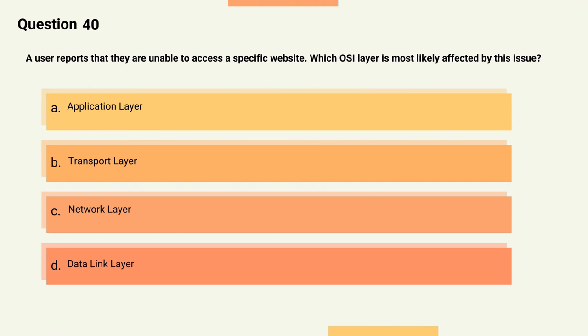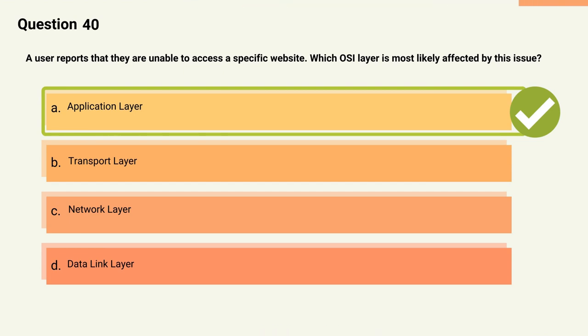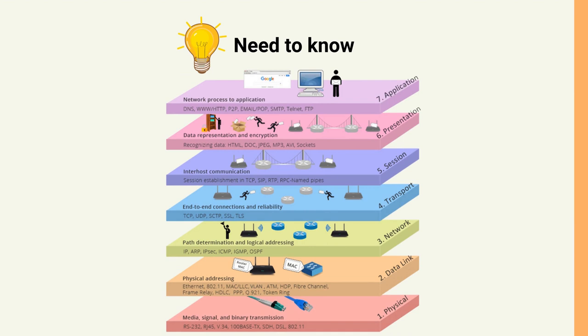Question 40: A user reports that they are unable to access a specific website. Which OSI layer is most likely affected? Options: A) Application layer, B) Transport layer, C) Network layer, D) Data link layer. The correct answer is Option A, Application layer. Explanation: The application layer deals with end-user applications and protocols such as HTTP used for websites.